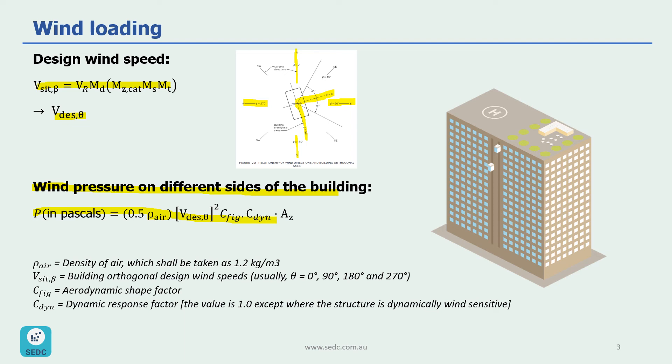C_fig, which is aerodynamic shape factor, which we are going to go into a lot of detail in the next few slides. And then C_dynamic, which is dynamic response factor, which is usually 1 except where the structure is dynamically wind sensitive. This is usually the case for very tall buildings. And then we have A_z, which is tributary area for the wind.